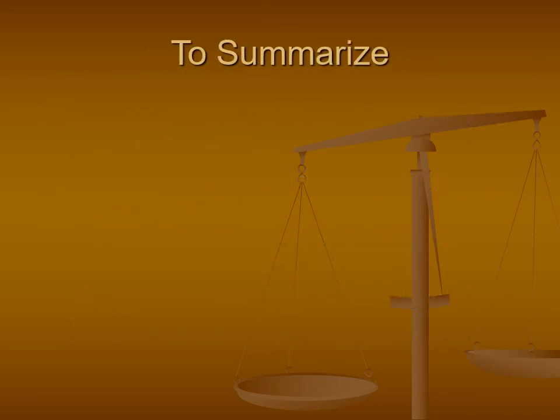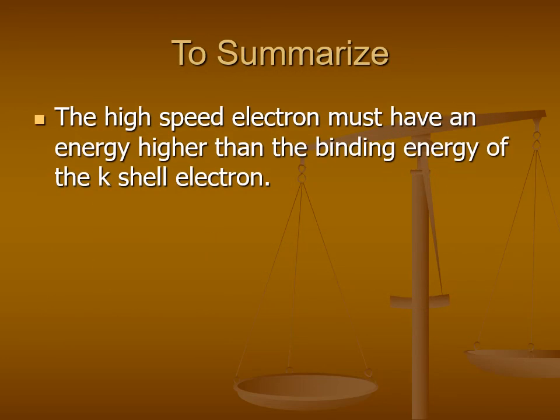Furthermore, don't forget that the electron that starts the characteristic process must have an energy greater than the binding energy of the K-shell electron to be able to dislodge it from its orbital.